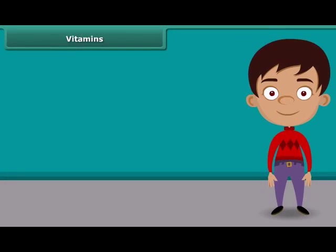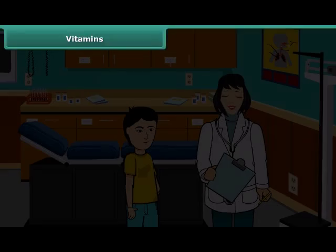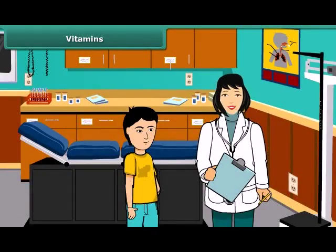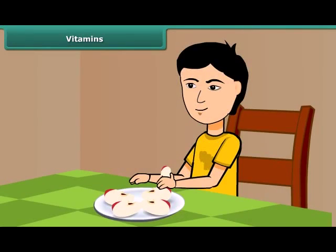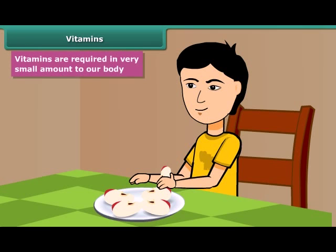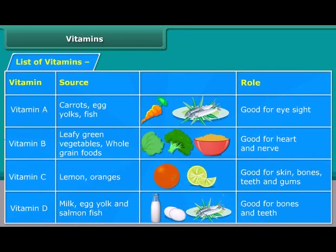Friends, when you get ill and go to the doctor, he advises you to take some fruits with light food because many of our body processes require vitamins present in foods and vegetables. They are required in very small amounts. Here is a list of vitamins, their sources and their roles.